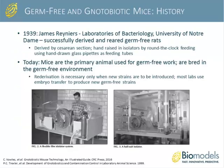Notobiotic animals were first developed by James Rainier in 1939 at the Lobund Laboratories of Bacteriology at the University of Notre Dame. The Rainier lab successfully derived and grew germ-free rats, which were derived by C-section and hand-raised in isolators by round-the-clock feeding using hand-drawn glass pipette feeding tubes. Today, mice are the primary animals used for germ-free work and are typically bred within the germ-free environment. Rederivation is only necessary when new strains are introduced, and most labs use embryo transfer to produce new germ-free strains.